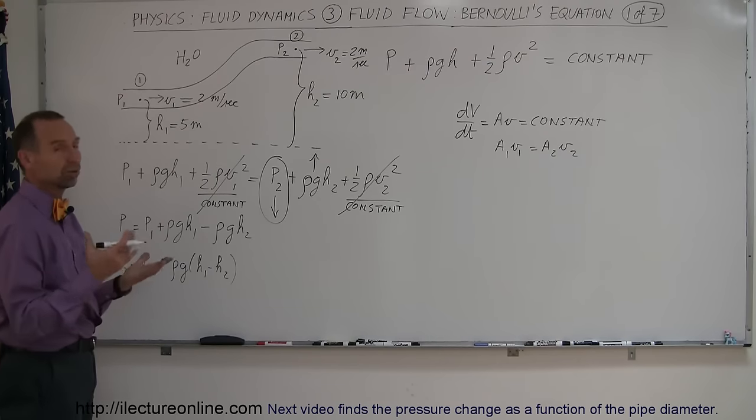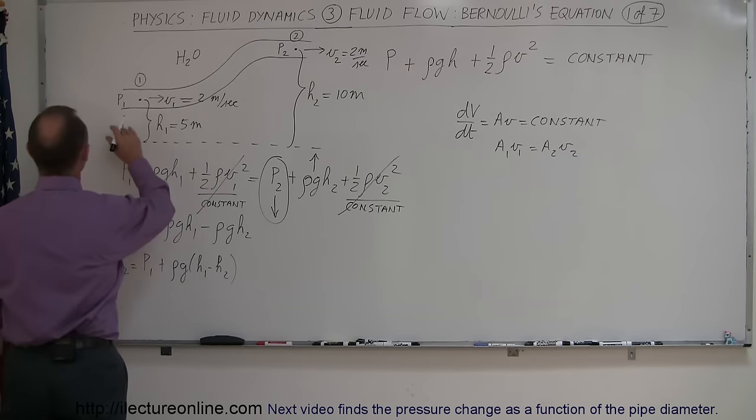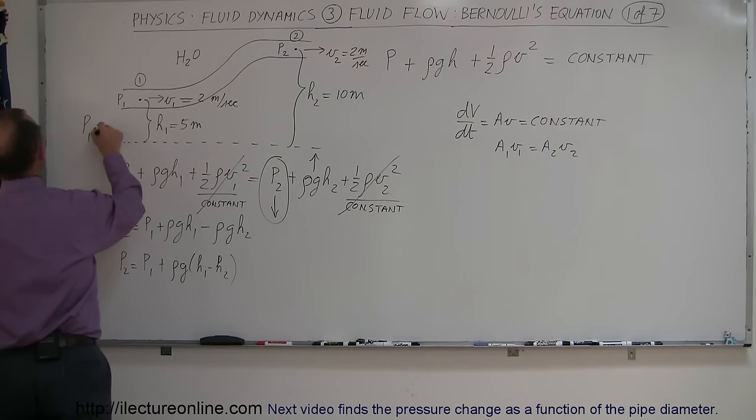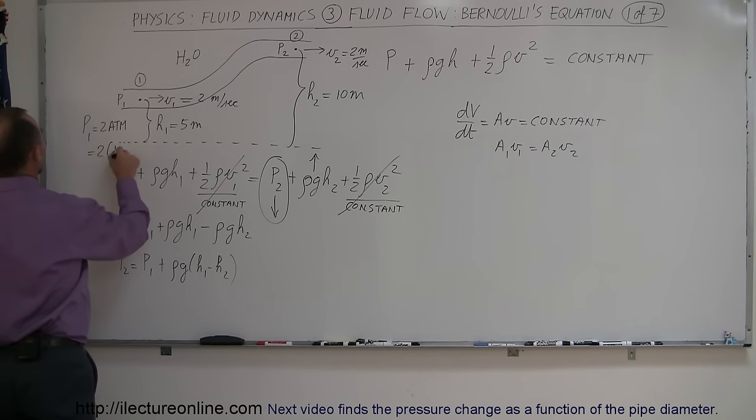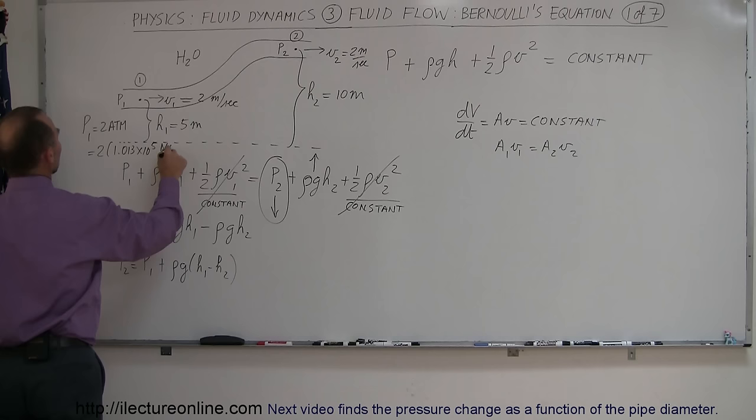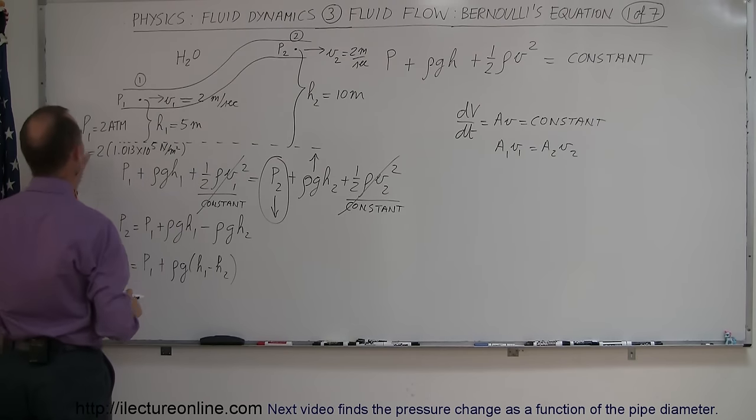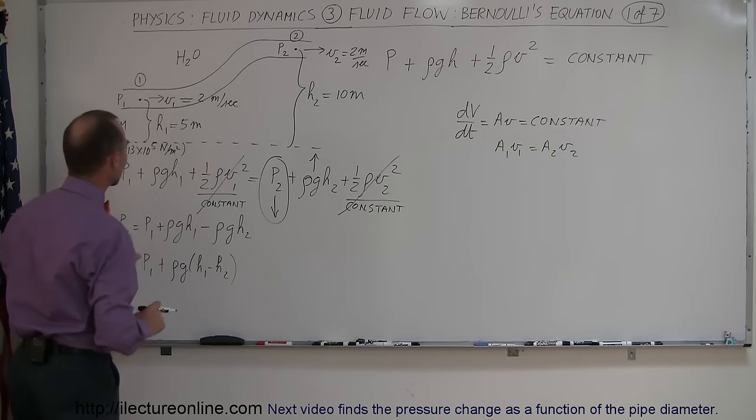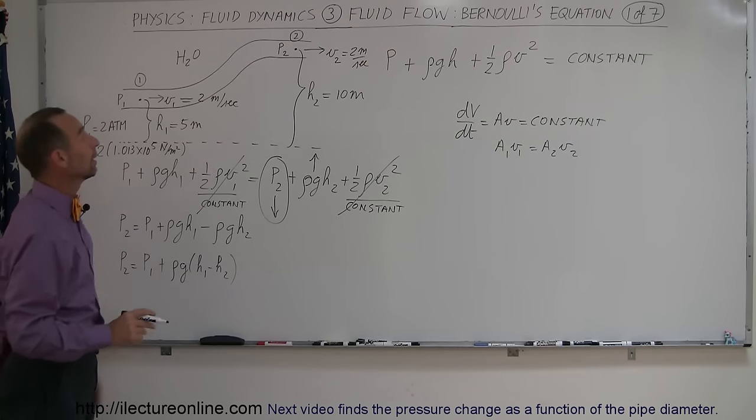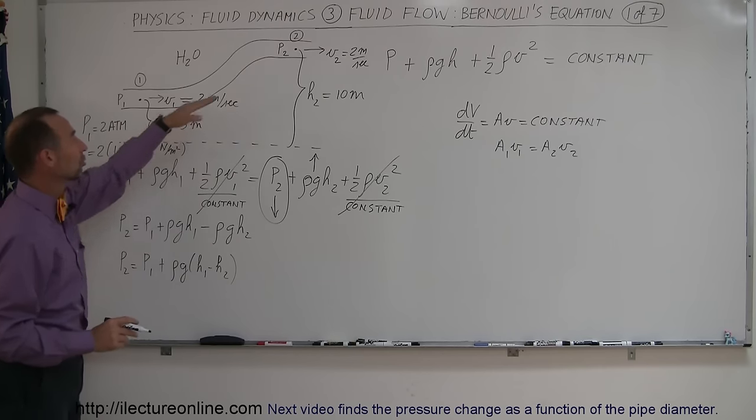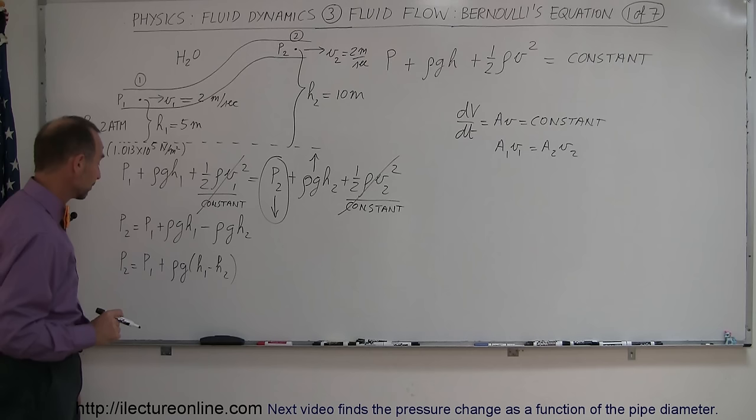Now, notice I did not give you pressure one. Well, I can put something in there, just let's say that pressure one, P1 is equal to two times atmospheric pressure. And of course, atmospheric pressure, that would be two times 1.013 times 10 to the fifth newtons per square meter. All right, so let's say that pressure one was two atmospheres. How much will the pressure have changed by allowing the pipe to go up an additional five meters from where it was before?